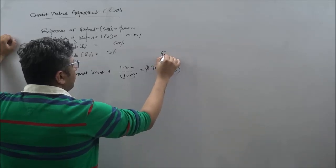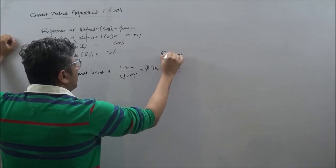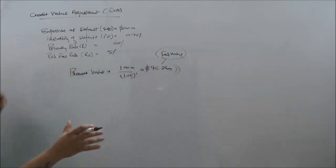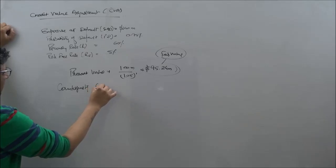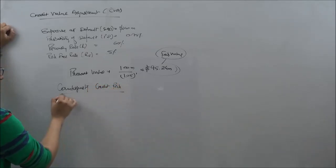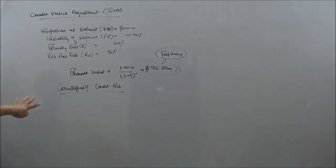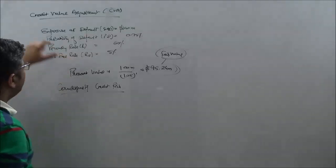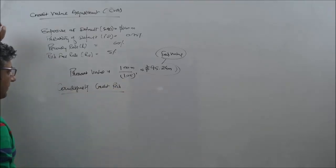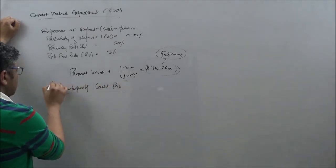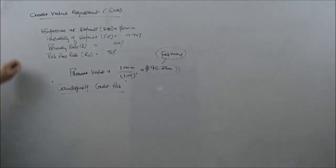It would come at 95.24 million dollars. So per se, this becomes a fair value, but in reality there is a risk which is referred to as a counterparty credit risk. So what we need to do here is that we need to assess what is the value of this particular investment, the amount given to the counterparty.